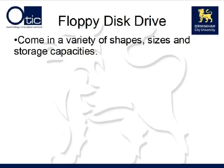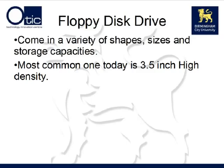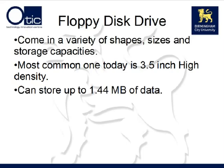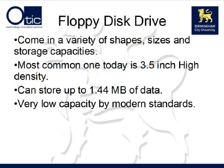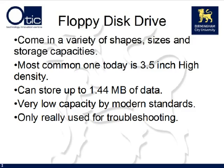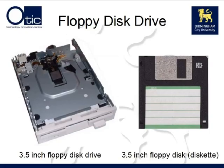The next common type of magnetic storage device we'll look at is the floppy disk drive. Over the years, floppy disk drives and disks that fit into them have come in a variety of shapes, sizes, and storage capacities. However, today you'll pretty much only ever find the 3.5-inch high-density drive available. This can store up to 1.44 megabytes of data on a normal floppy disk. This is a very low capacity of storage by modern standards and therefore it isn't used that much nowadays, though it is still used for troubleshooting a computer when it does not boot. Here we can see a 3.5-inch floppy disk drive on the left and a 3.5-inch floppy disk, or diskette, on the right.